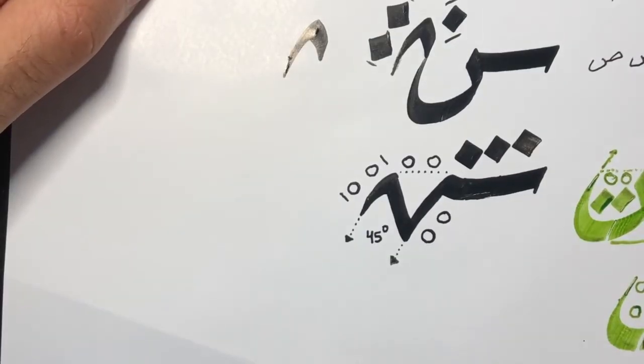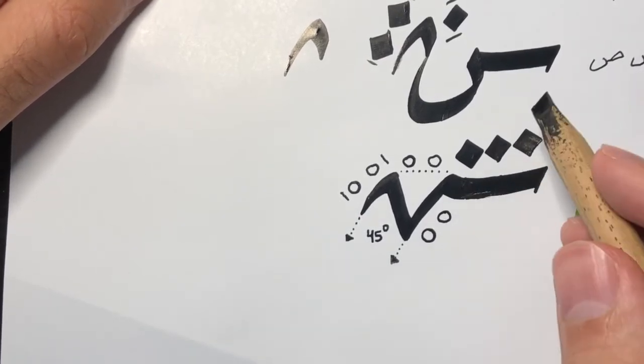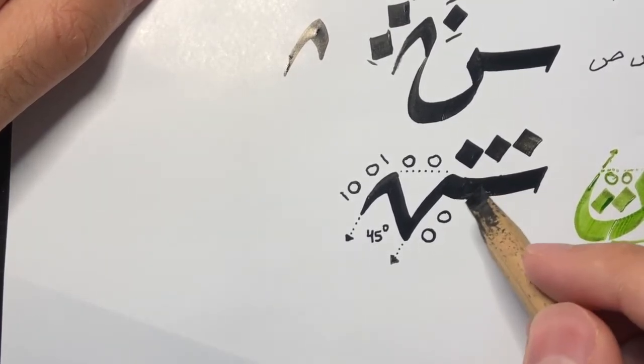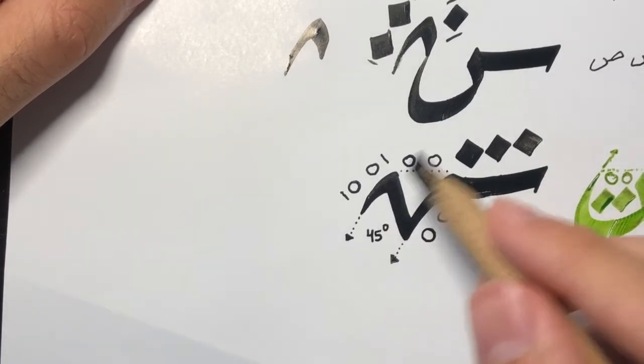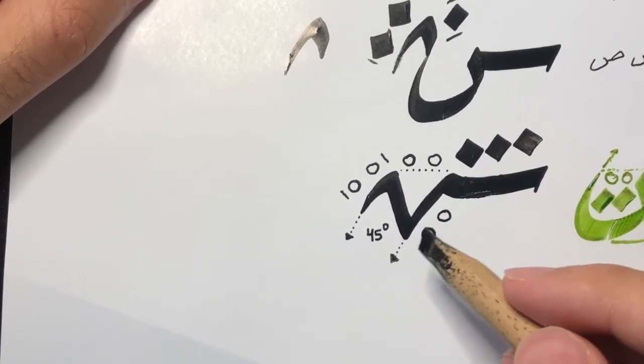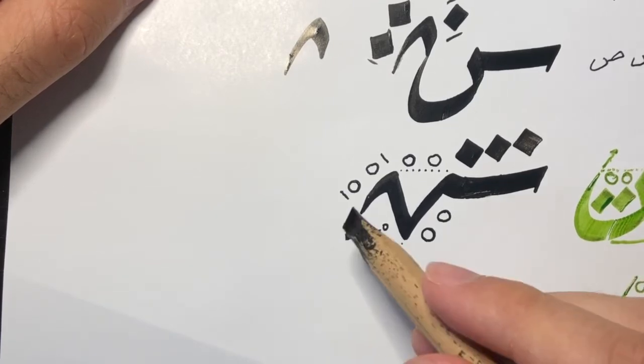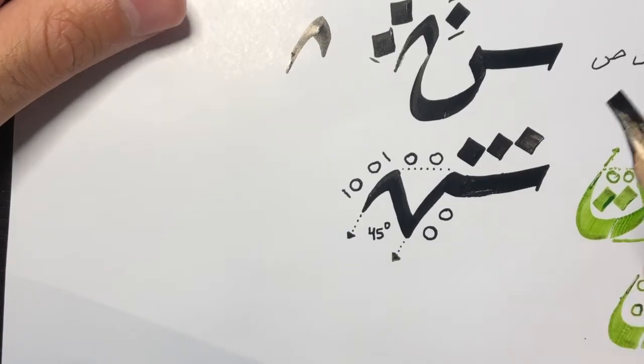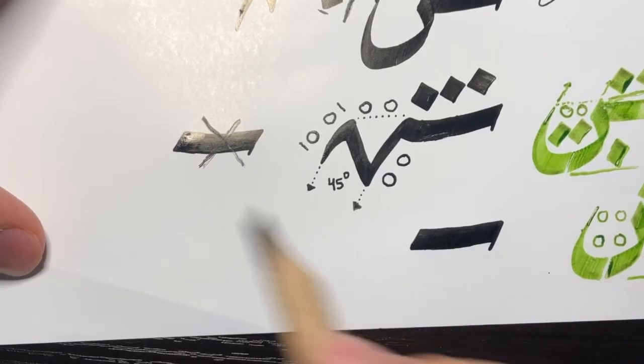For the second shape, it is the same as the head for harf al-shin with all its proportions again. For the tail, it's a little different, and this is going to be a new part that you're going to learn. However, this new part is the same for harf al-thah, so once you learn this you'll be solid for harf al-thah.